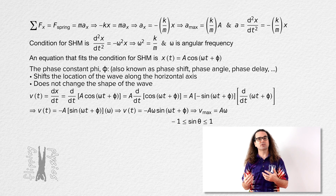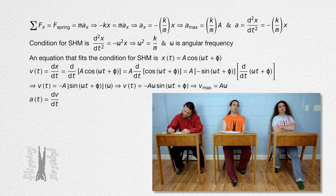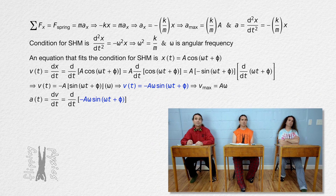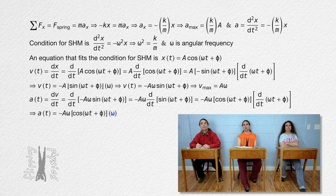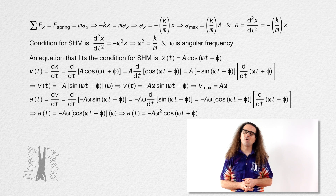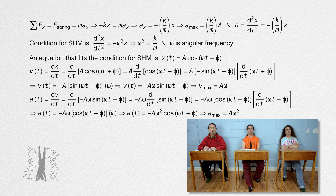Please determine acceleration as a function of time. Acceleration equals the derivative of velocity with respect to time, so the derivative with respect to time of the velocity equation. Negative amplitude times angular frequency is constant, so take that out from the derivative. The derivative of sine is cosine, and using the chain rule, the derivative of the parenthetical expression with respect to time is just angular frequency. So the acceleration equals the negative of amplitude times angular frequency squared times the cosine of the quantity angular frequency times time plus phase constant. The maximum acceleration equals amplitude times angular frequency squared. Well done, Bobby.